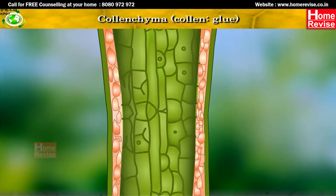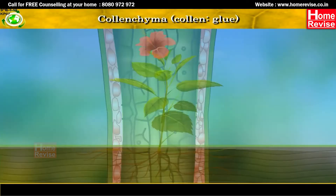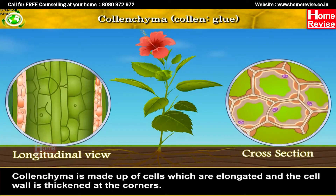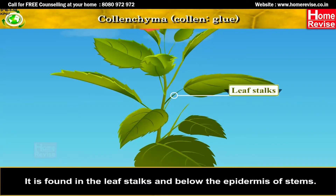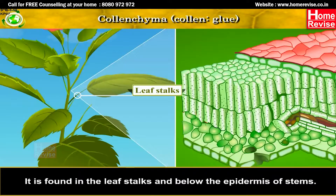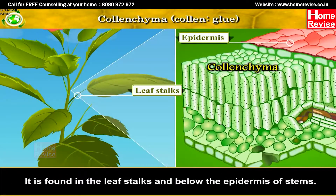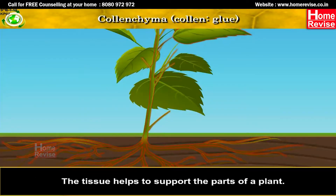Colenchyma is made up of cells which are elongated, and the cell wall is thickened at the corners. It is found in the leaf stalks and below the epidermis of stems. This tissue helps to support the parts of a plant.